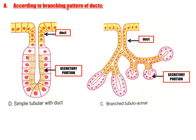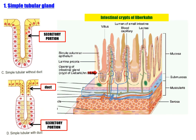Based on the shape of the secretory unit: tubular glands have a secretory unit tubular in shape; the tube may be straight, coiled, or branched — example: gastric gland. Acinar glands have a secretory unit round or oval in shape — example: salivary gland. Simple tubular without duct and simple tubular with duct are distinguished by the presence or absence of the duct.